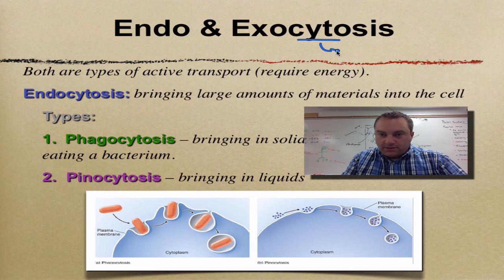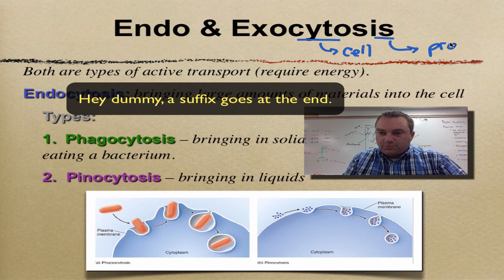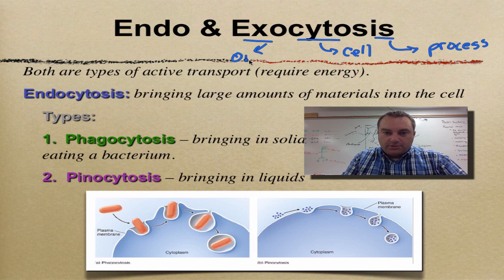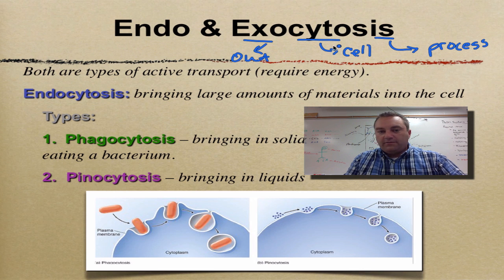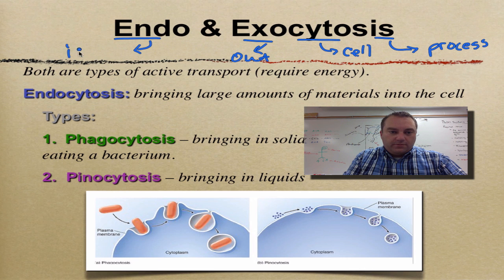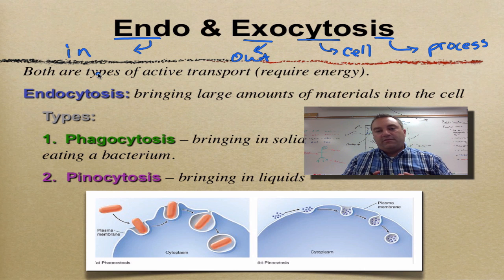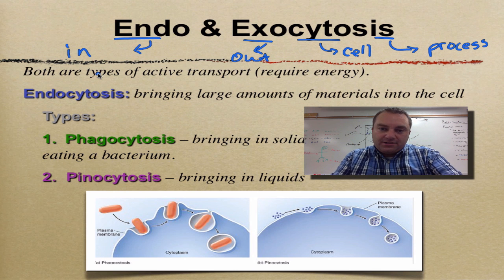When you see the word cyto, that means cell. And when you have the suffix -osis, that means process. Exo means out, so exocytosis is a process of moving things out of the cell. And endo means coming in, so endocytosis is a process of moving things into the cell. Endo into the cell, exo out of the cell.